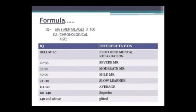IQ classifications are as follows: below 20 means profound mental retardation; 20 to 35 is severe mental retardation; 35 to 50 is moderate mental retardation; 50 to 70 is mild mental retardation; 71 to 90 is slow learner; 91 to 110 is average.